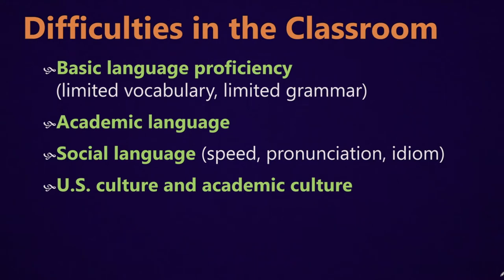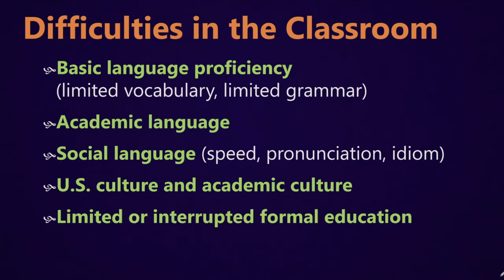There might be a problem understanding what is okay to talk about with your peers and what's not okay to talk about, or what's okay to talk about with the teacher. Or if someone comes from a country where they're expected to just sit in class and listen to the teacher talk, they might not ask questions even if they have them. Then there are students with limited or interrupted formal education — many English learners who have come to the United States as refugees often had limited or interrupted education in their home country, resulting in gaps in their education and academic skills.